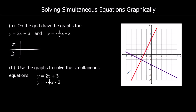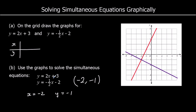The solution to simultaneous equations is where the graphs cross — where they intersect. They cross at (−2, −1), which means x is negative 2 and y is negative 1. Substituting into the first equation: negative 1 equals 2 times negative 2 plus 3, so negative 1 equals negative 4 plus 3 — correct. For the second: negative 1 equals minus a half times negative 2, giving negative 1 equals 1 minus 2 — which is also correct.